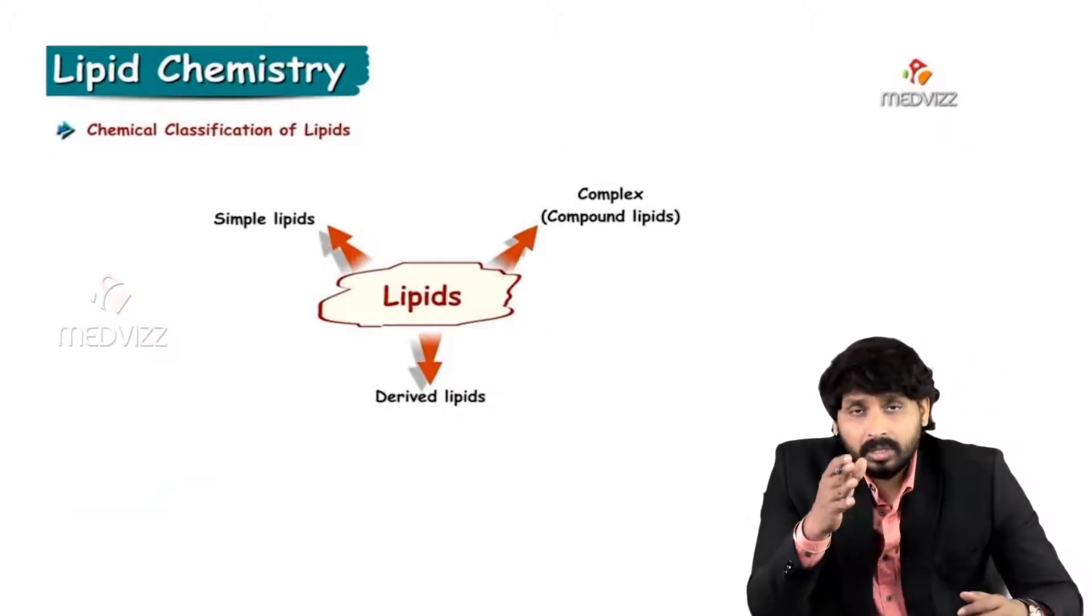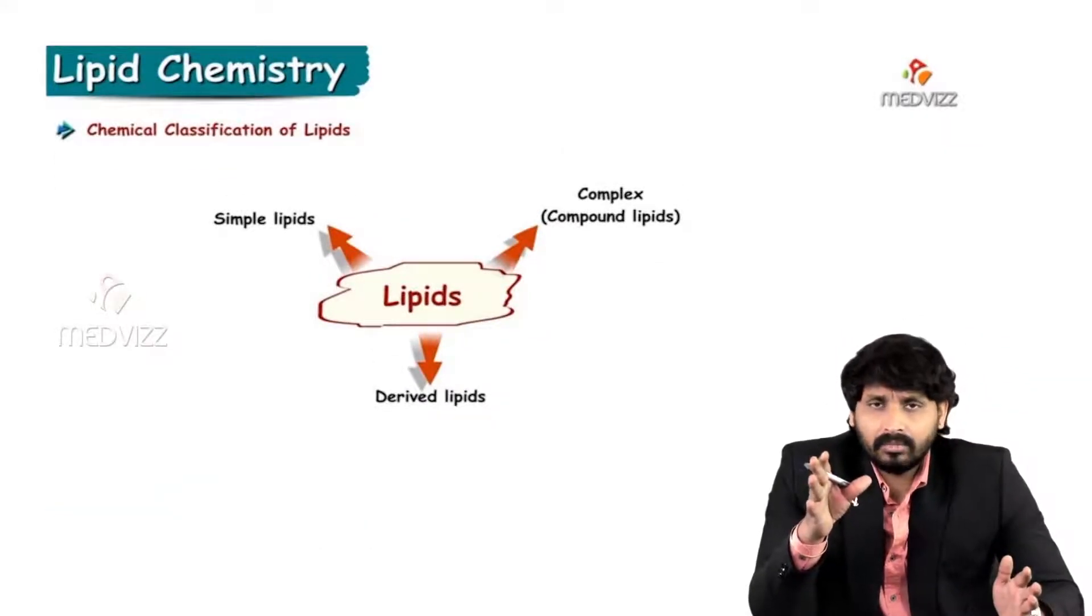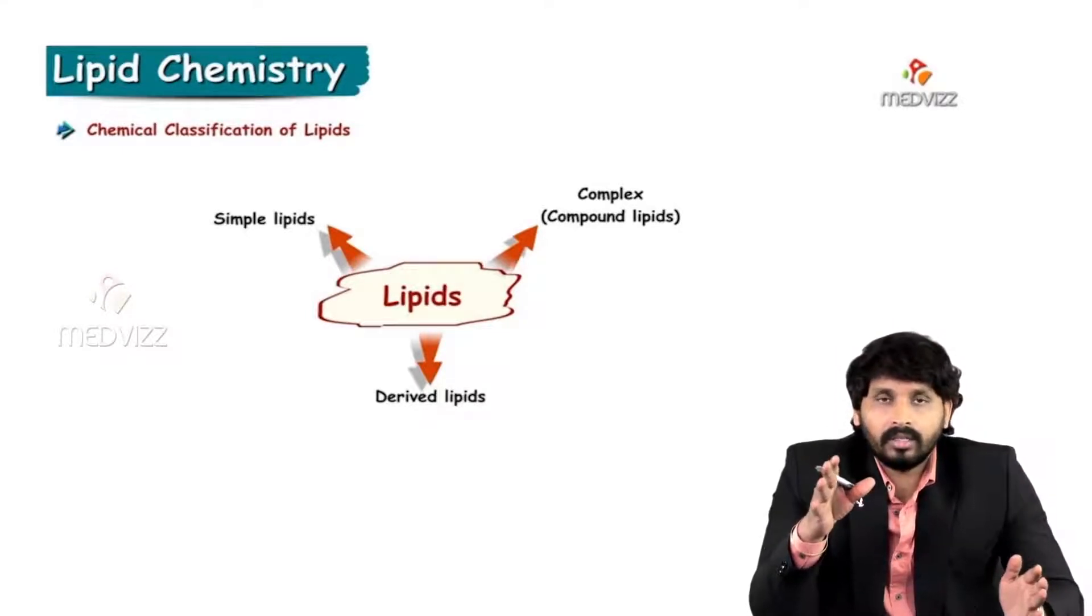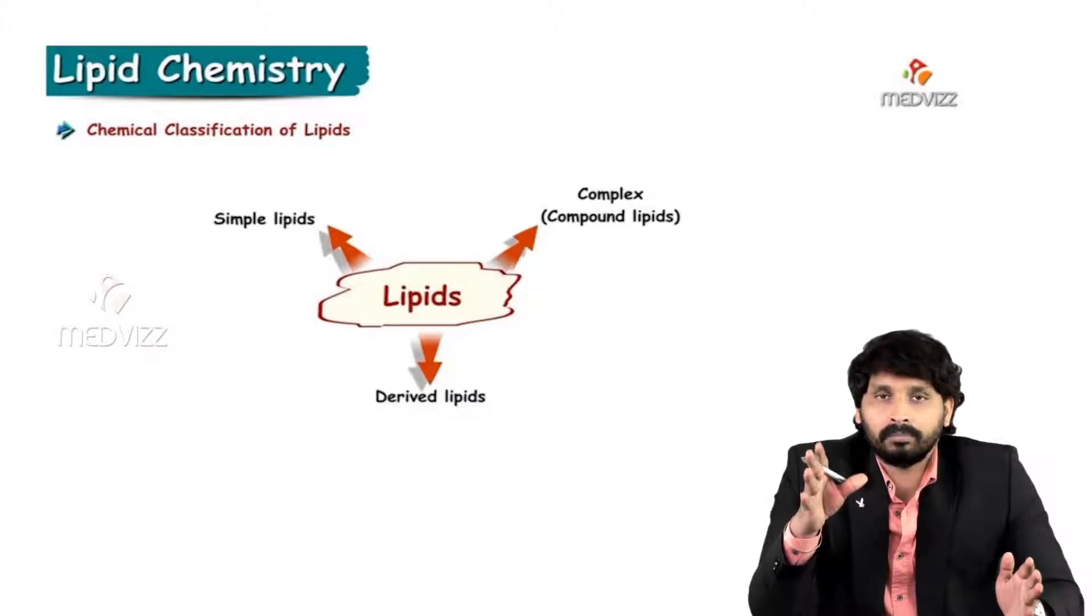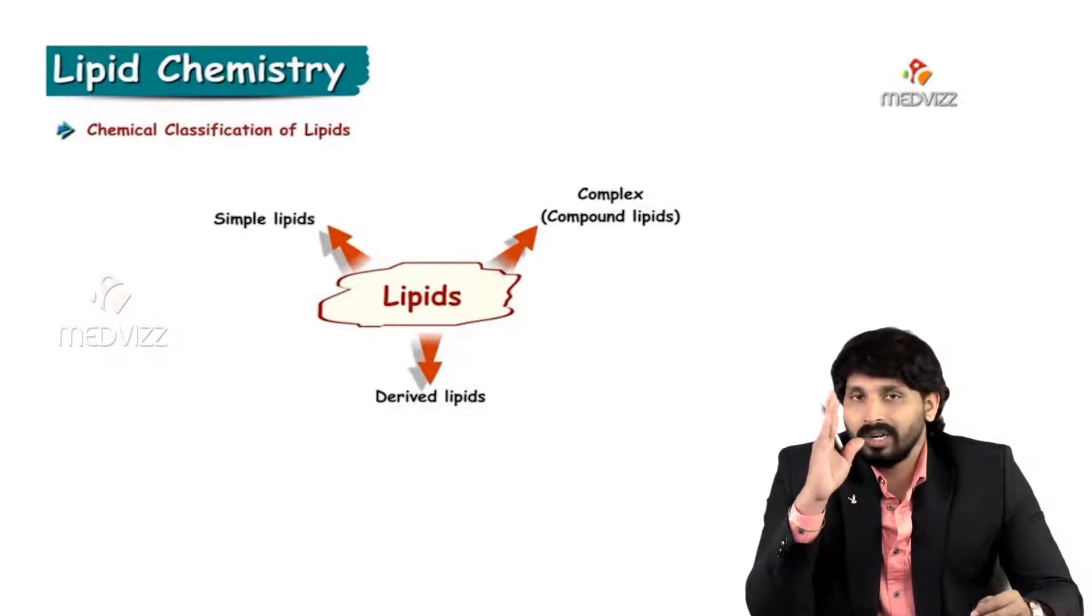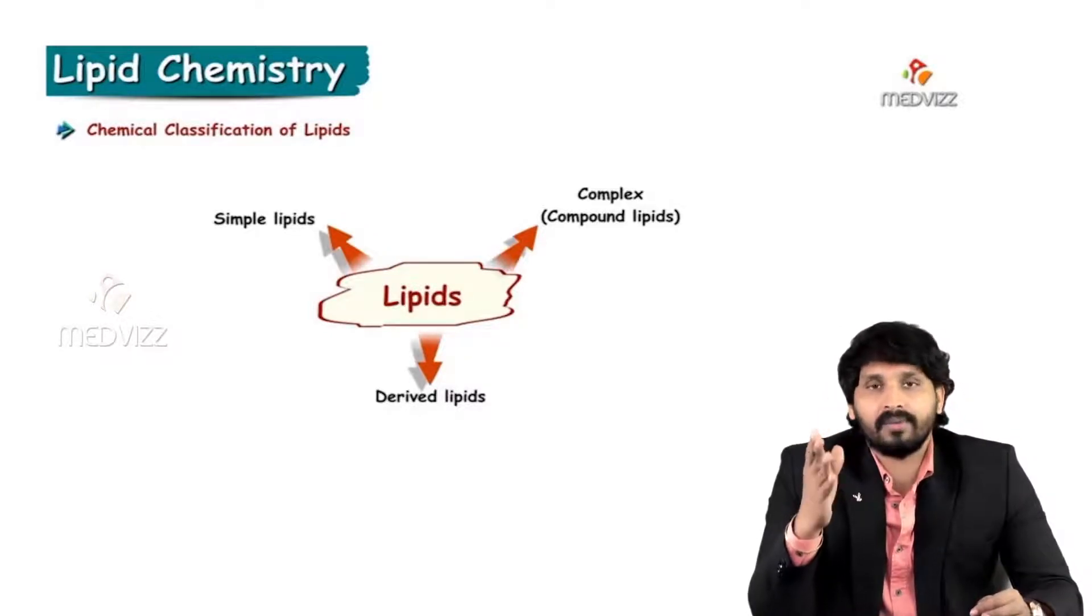Coming to the classification of lipids: simple, complex, and derived. There are three categories of lipids. As per the classification, one is simple lipid, second one is complex or compound lipid, third one is derived lipid.